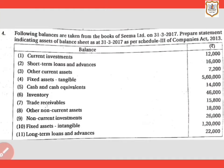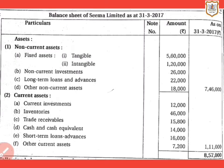Hello everyone. Today we are going to do question number four of your textbook. The question is: following balances are taken from the books of Sema Limited on 31st March 2017. Prepare a statement indicating assets of the balance sheet as at 31st March 2017 as per Schedule III of the Companies Act 2013. Here we have to prepare the balance sheet of Sema Limited as on 31st March 2017.